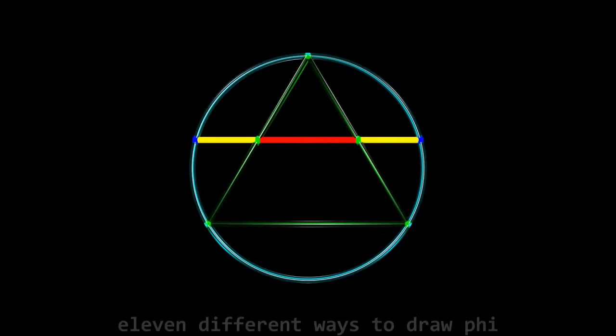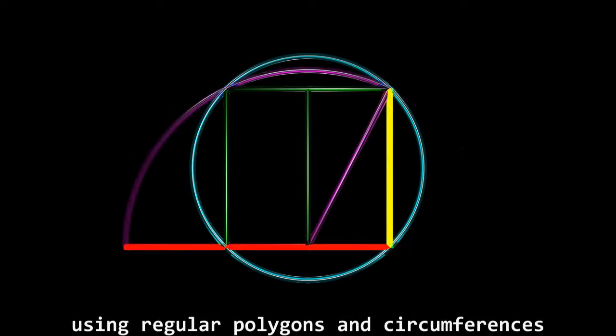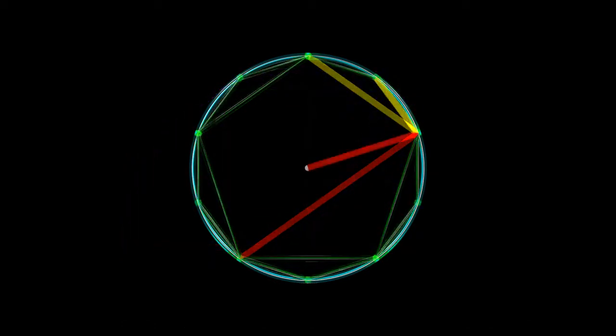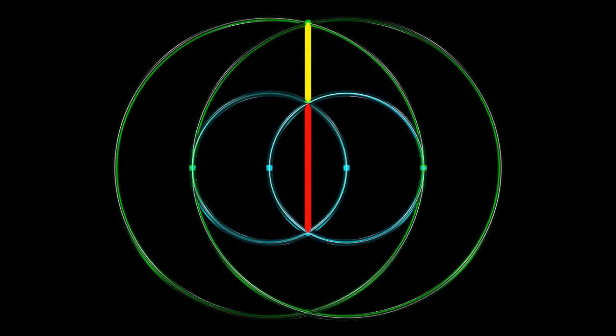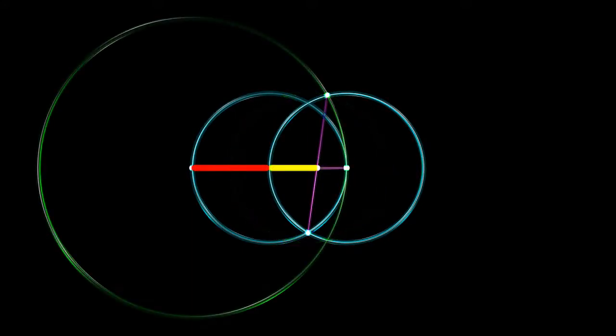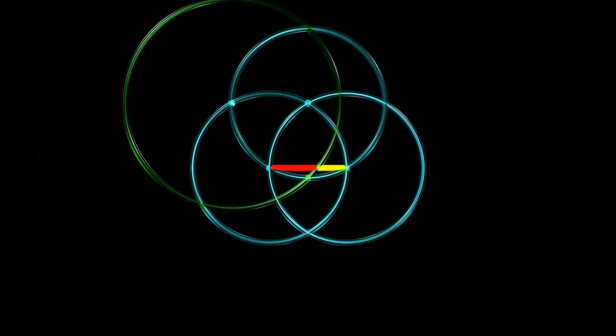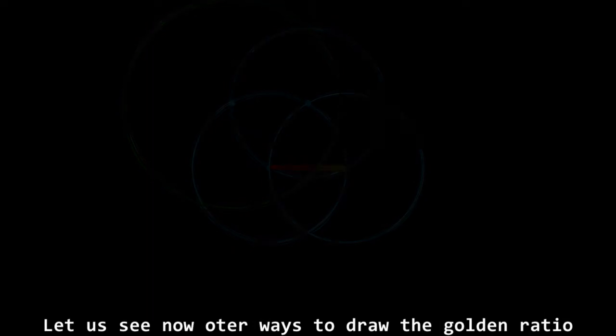In previous chapters, we saw 11 different ways to draw phi using regular polygons and circumferences. Let us now see other ways to draw the golden ratio using triangles.